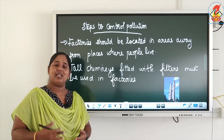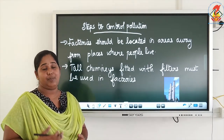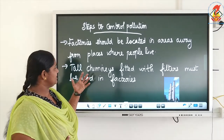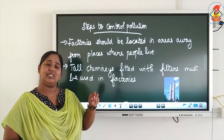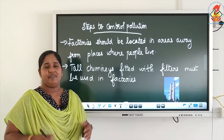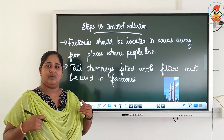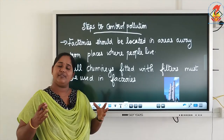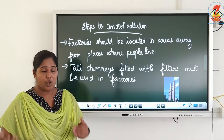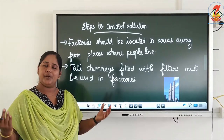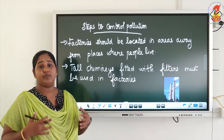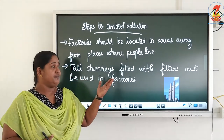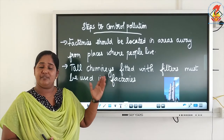Let us learn about the different steps that have to be adopted in order to control pollution. The authorities have to make people aware about the importance of controlling pollution. The first step is locating factories away from places where people live. Factories have to be set up because we need to meet the increasing needs of human beings, so they should be set up in areas where people are not living.